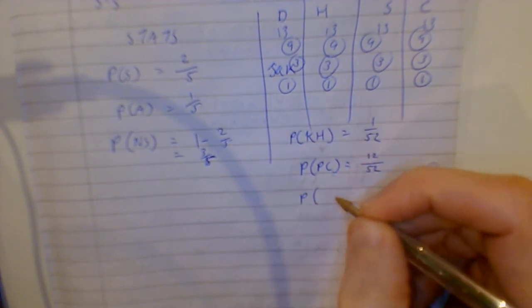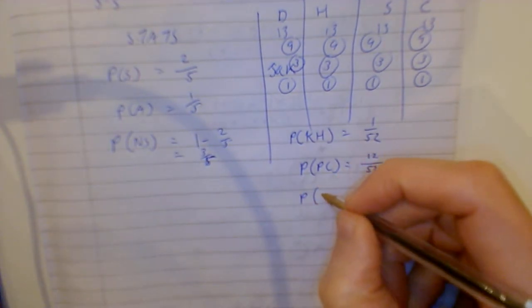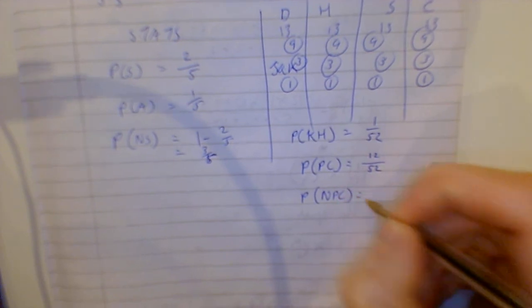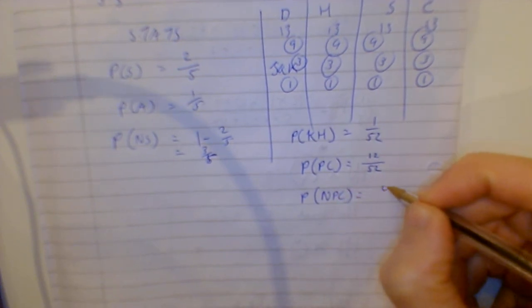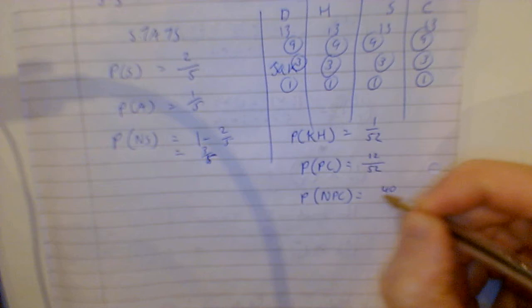The back of the book's gonna give you: what's the probability I won't get a picture card? No picture cards, it's gonna be 1 minus that, so it's 40 over 52. That's basic, anybody can do that.